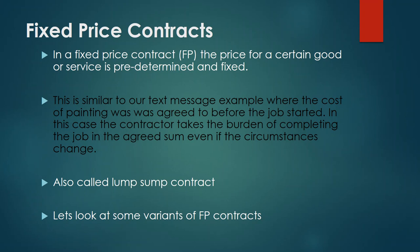This is very similar to the example from the last video, where we agreed to pay a painter about three hundred dollars for a certain job. Once the agreement is made and the painter has done the painting job, you give him three hundred dollars — because it is a fixed price contract. Now let's look at some modifications or variants of the fixed price contract.